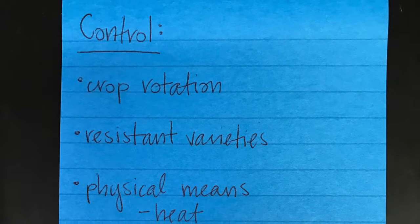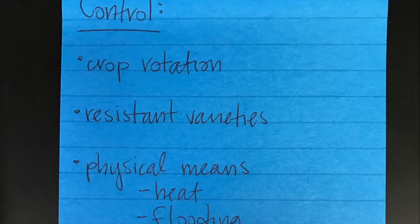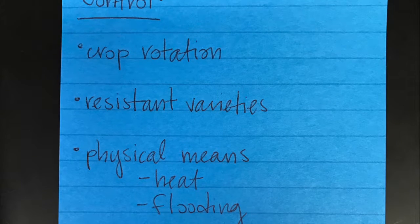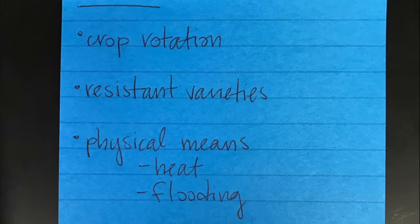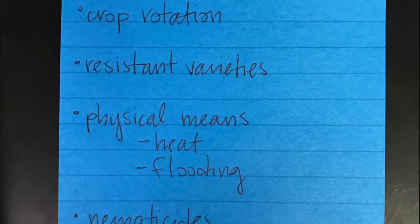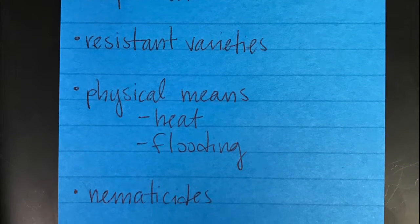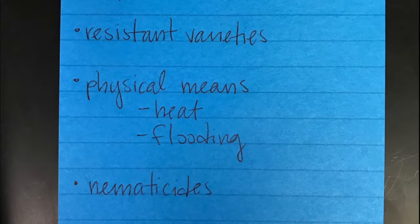Control measures include crop rotation, planting resistant varieties, physical means such as heat and flooding, and chemical means like nematocides.